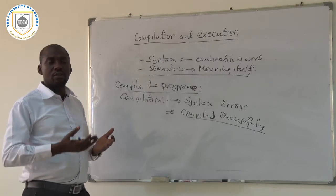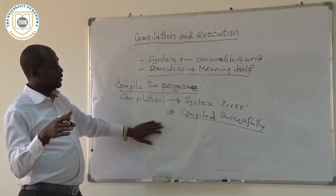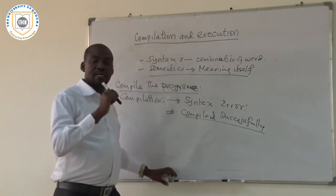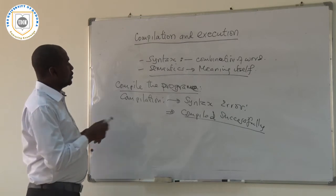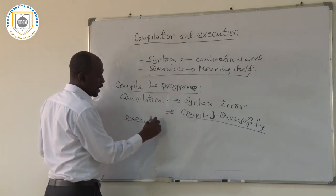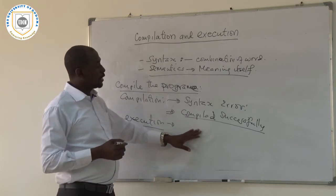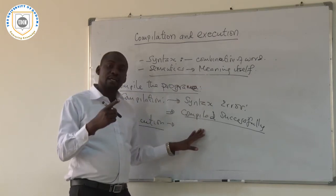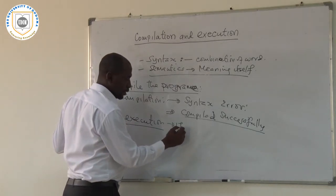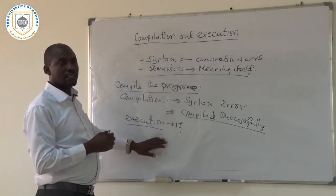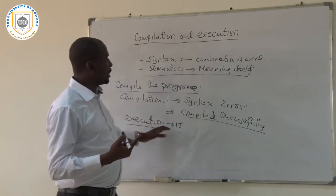But a program which doesn't contain any syntax error does not mean that it works as it's supposed to work, or that it gives the right answer or the intended solution you expected to get. So after compiling it, you want to go further and see: is my program semantically right? Meaning, is it giving what I intended to get? This is what we call execution — executing the program to check whether there is a semantics error and whether it brings the output you intended to get.